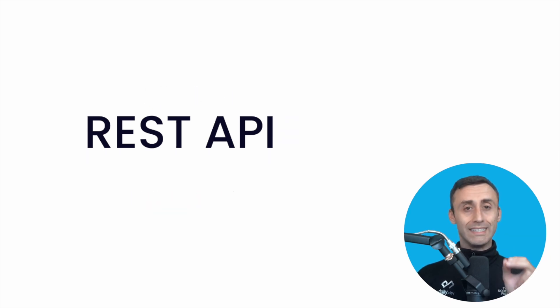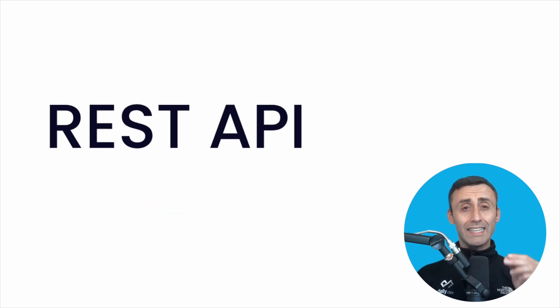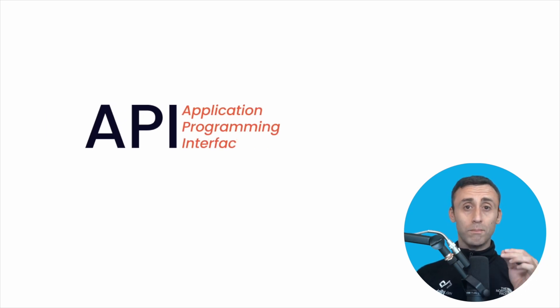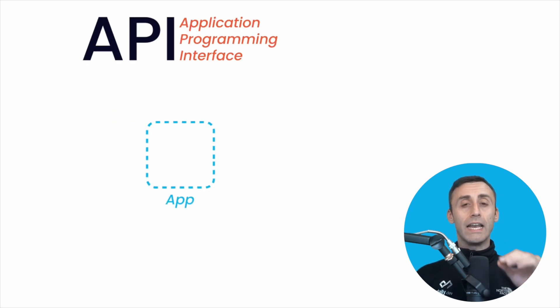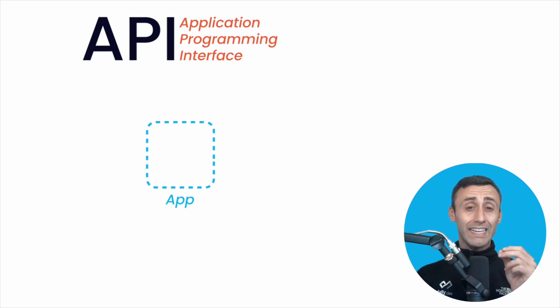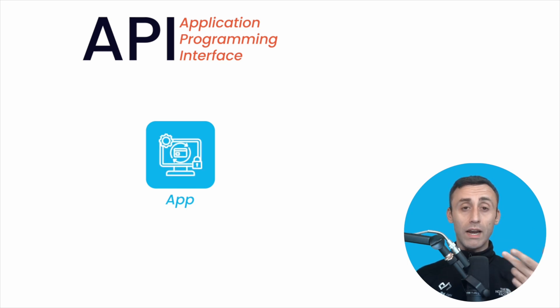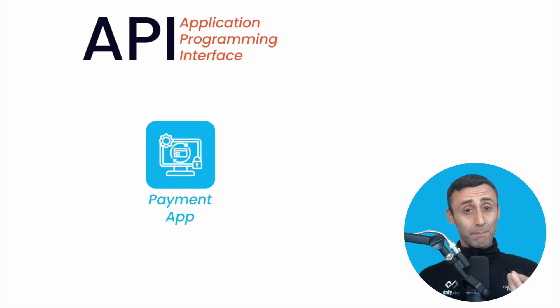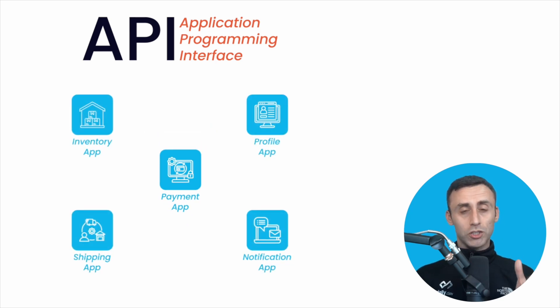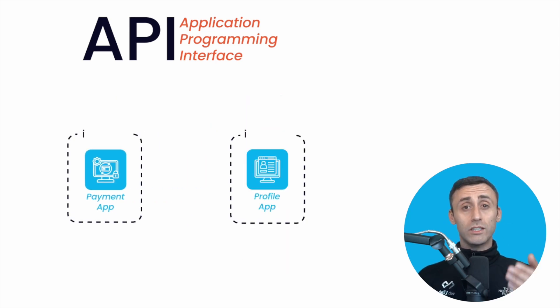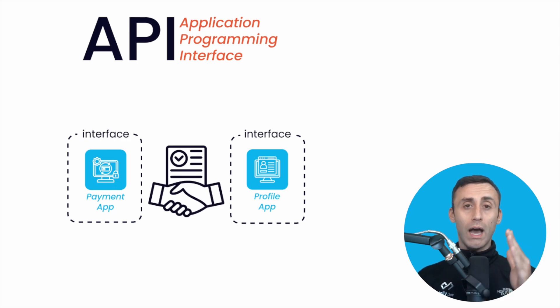Let's begin with the term itself — REST API. First, let's understand in brief what an API is. API stands for Application Programming Interface. In the context of programming, application means an independent piece of software with a distinct function. For example, in the tech architecture of a company, there can be an application that just handles everything related to payments — that means it's a payment application. Similarly, there are defined applications for each distinct functionality.